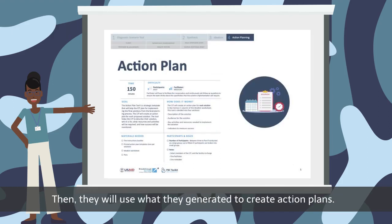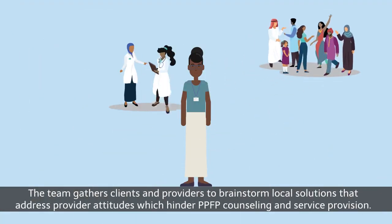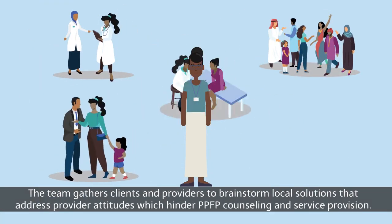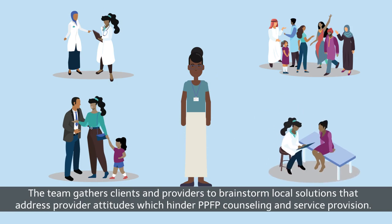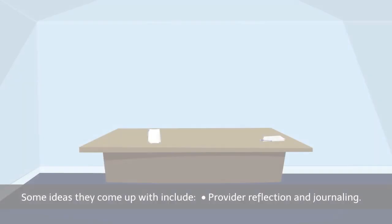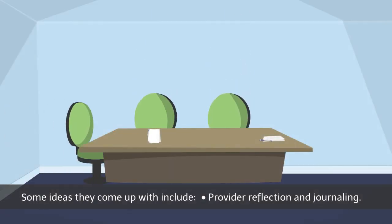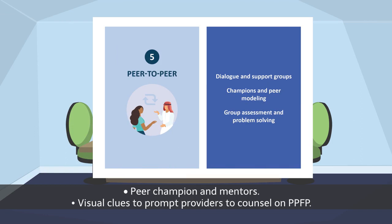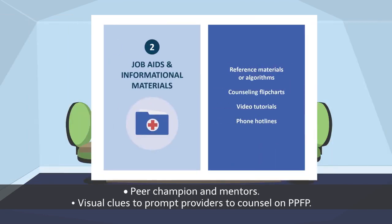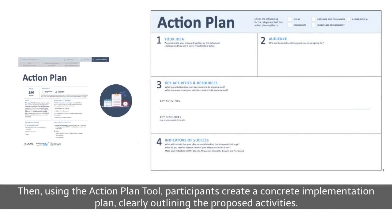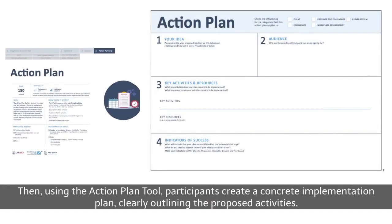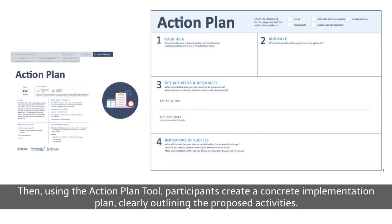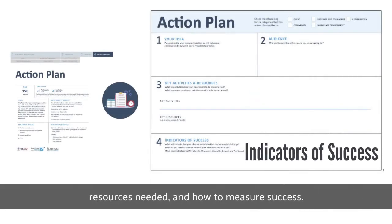Then, they will use what they generated to create action plans. The team gathers clients and providers to brainstorm local solutions that address provider attitudes which hinder PPFP counselling and service provision. Some ideas they come up with include provider reflection and journaling, peer champions and mentors, and visual cues to prompt providers to counsel on PPFP. Then, using the Action Plan tool, participants create a concrete implementation plan clearly outlining the proposed activities, resources needed, and how to measure success.